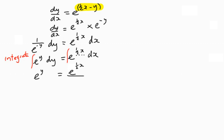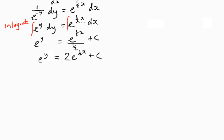Simplifying that: e to the y equals two e to the half x plus c. We've got an exponential function with a power of y, so we take a natural log of both sides.